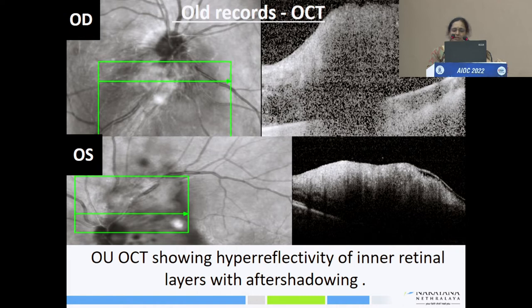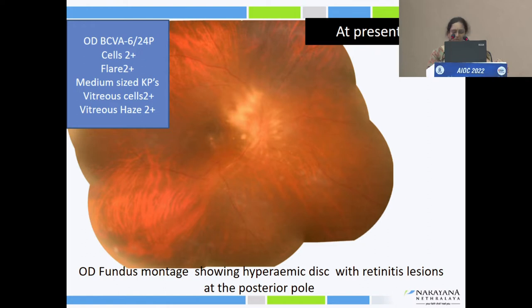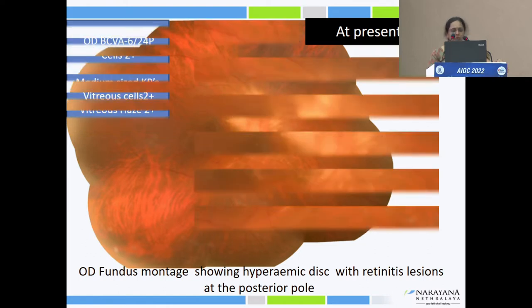When the patient presented to us, he had decreased vision in both eyes. Best corrected visual acuity was 6/24. There was AC reaction, vitreitis and vitreous haze. There was hyperemia of the disc with retinitis in the posterior pole.